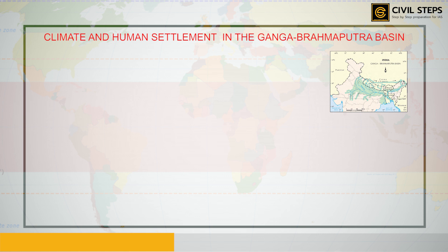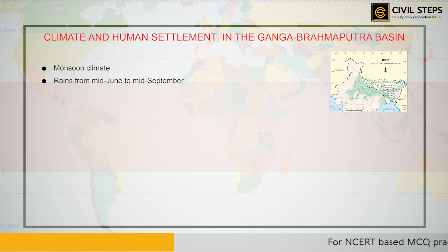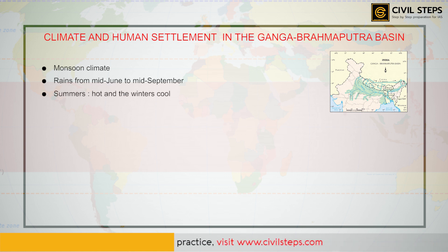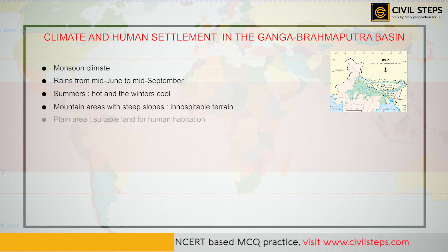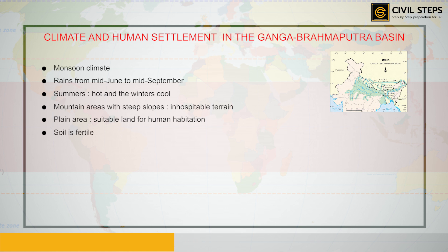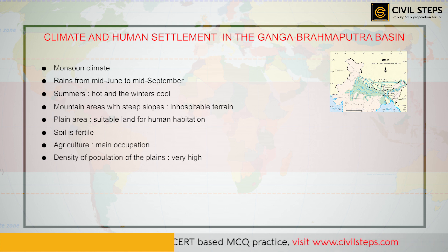The area is dominated by monsoon climate. The monsoon brings rains from mid-June to mid-September, summers are hot, and winters are cool. The environment plays a dominant role in population distribution. Mountain areas with steep slopes have inhospitable terrain, so fewer people live there. The plain area provides the most suitable land for human habitation with very fertile soil, making agriculture the main occupation. The density of population in the plains is very high.